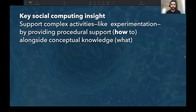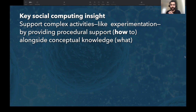The key social computing insight from Galileo is that supporting complex knowledge activities like experimentation requires procedural support — knowing how to do something — alongside conceptual knowledge, which is knowing what to do.